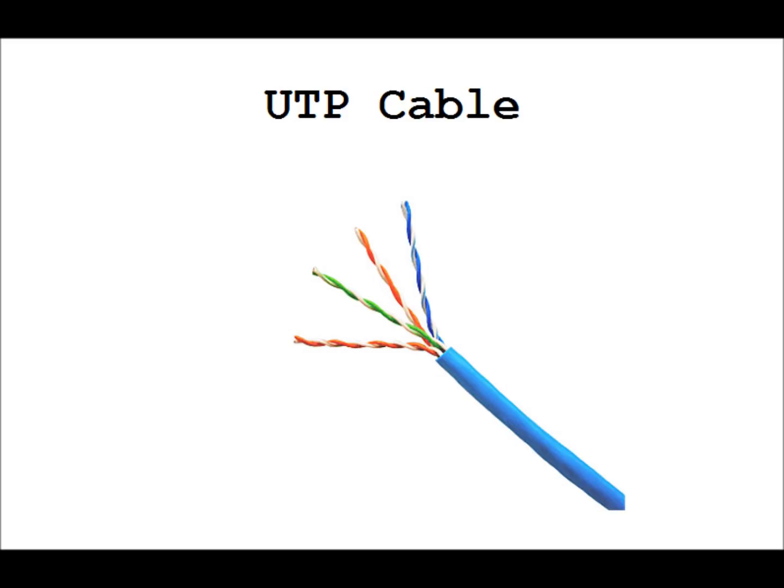The UTP cable is the most common cable used in computer networking due to its low cost. UTP cabling is used extensively for local area networks, also known as LANs, and also for telephone connections. However, UTP does not offer as high bandwidth or as good protection from interference as STP does, due to the fact that there is no shield in UTP.